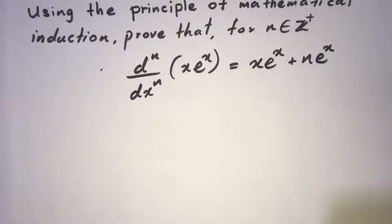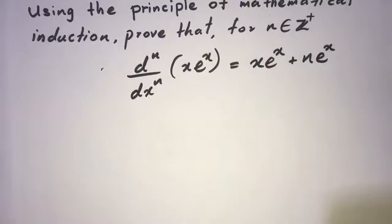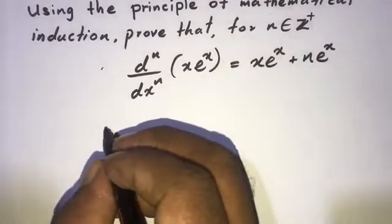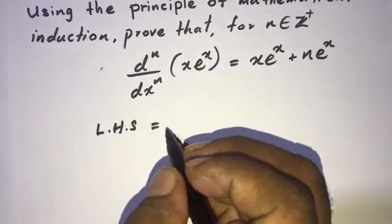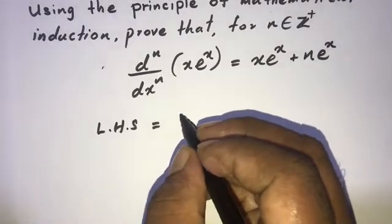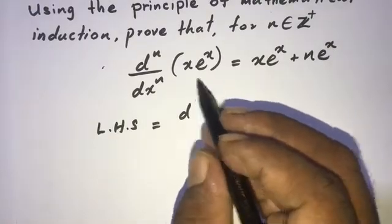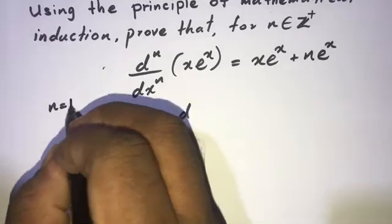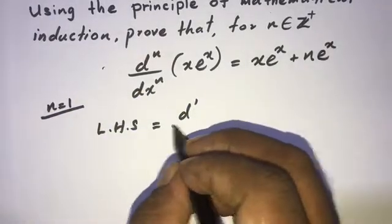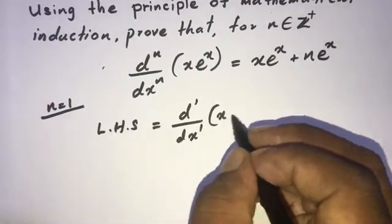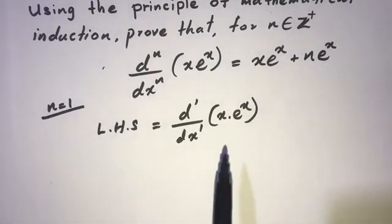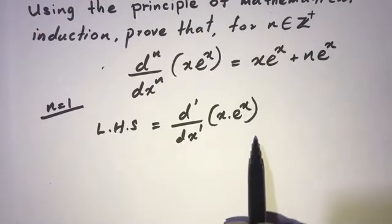In mathematical induction, the first step is the base case — it proves that a statement is true for the initial value. We are checking the base case for n equal to 1. To do this, we need to prove that the left hand side equals the right hand side. So LHS equals d/dx of x·eˣ, which is the first derivative of x·eˣ.